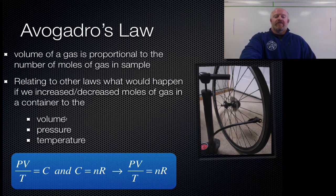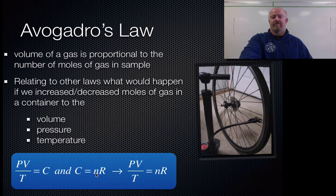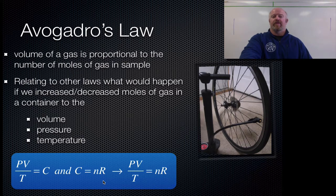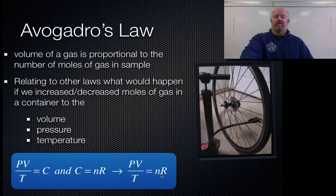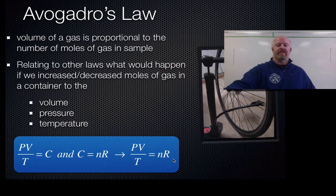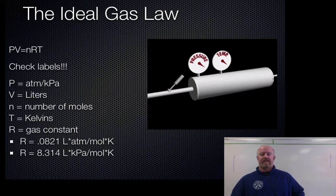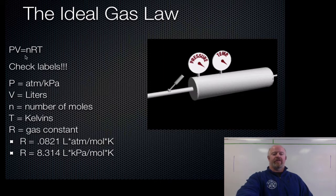What Avogadro's Law does for us is it adds a new relationship. We now say N — which stands for number of moles. We don't use M because M is related to too many other things like mass and molality. So we use N for number of moles times R, which is just a constant — a mathematical number we put in to make things equal. If you do those relationships together, we see that pressure times volume divided by temperature equals N times some gas constant. That leads us into the ideal gas law.